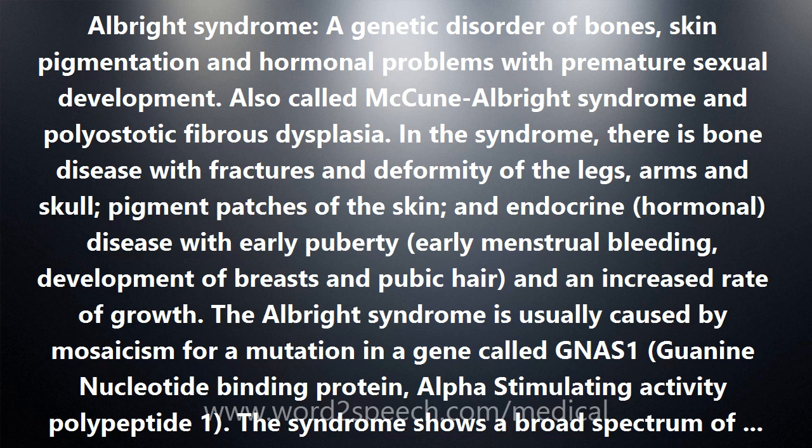Sometimes children are diagnosed in early infancy with obvious bone disease and markedly increased endocrine secretions from several glands. At the opposite end of the spectrum, many children are entirely healthy and have little or no outward evidence of bone or endocrine involvement. They may enter puberty close to the normal age and have no unusual skin pigment at all.